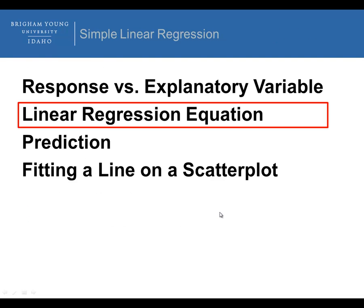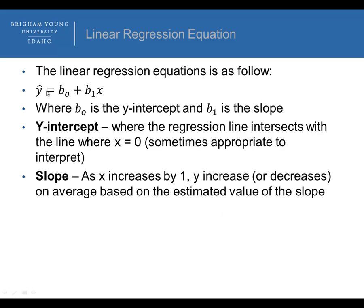The next item is the linear regression equation. The general form is y-hat — our predicted y — equals b-naught plus b1 times x, where b-naught is the y-intercept and b1 is the slope. This is similar to the algebra form y = mx + b, where m is the slope and b is the y-intercept. In statistics we write it with b-naught as the y-intercept and b1 as the slope.